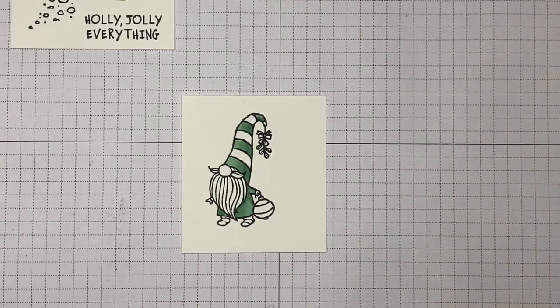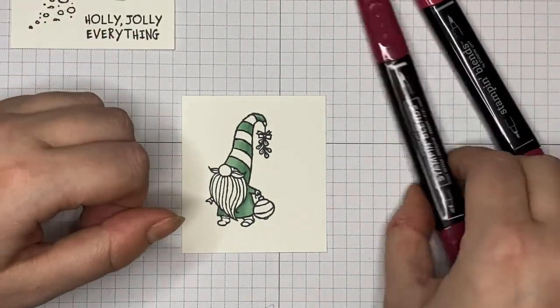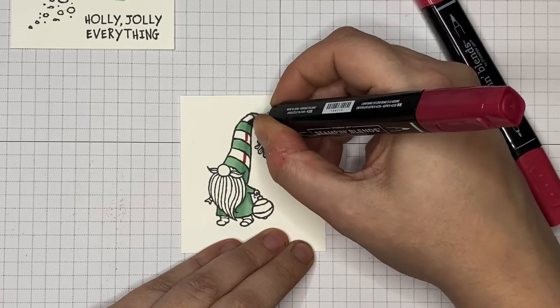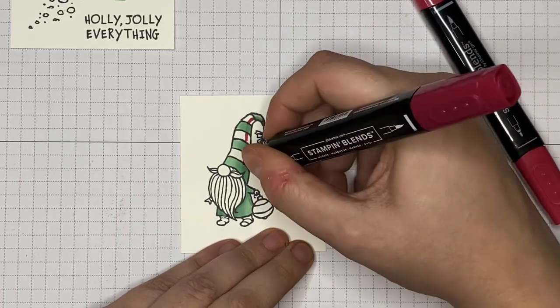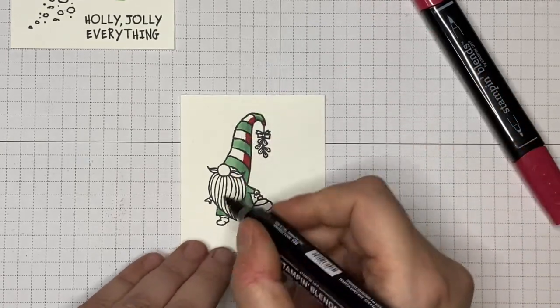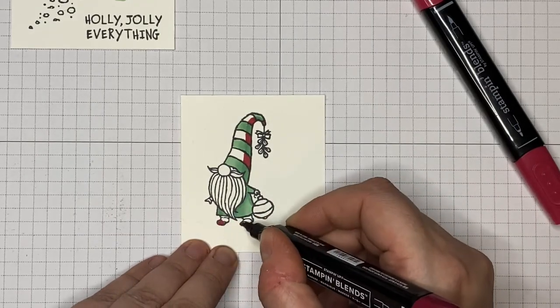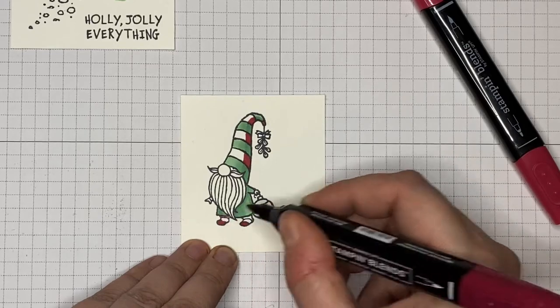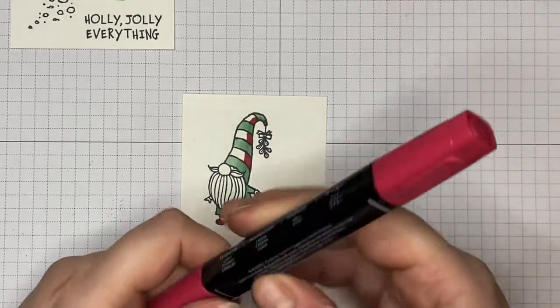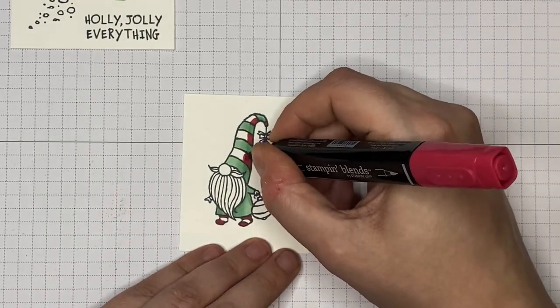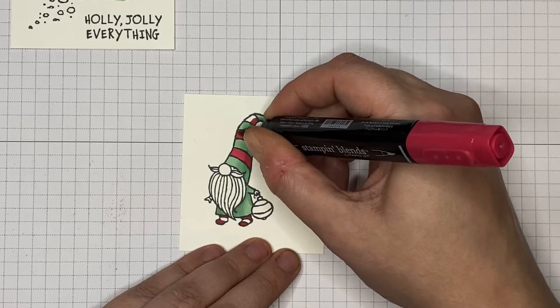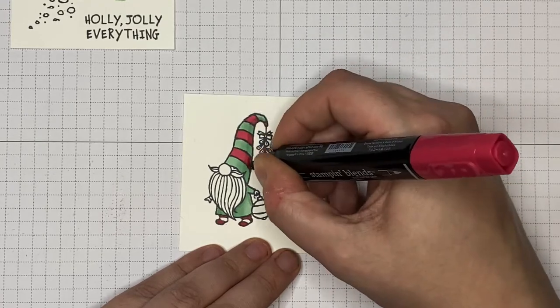And that's it now for the just jade. So I'll bring in the red shade I'm using is cherry cobbler and then I'm just following that line that I've already created in jade I'm just replicating it in the cherry. Like so again this is the dark pen and then I'm going to do the front of his shoes and the trousers like so. And then get the light cherry cobbler and just like the other go in and color the rest of it in and then blend out.